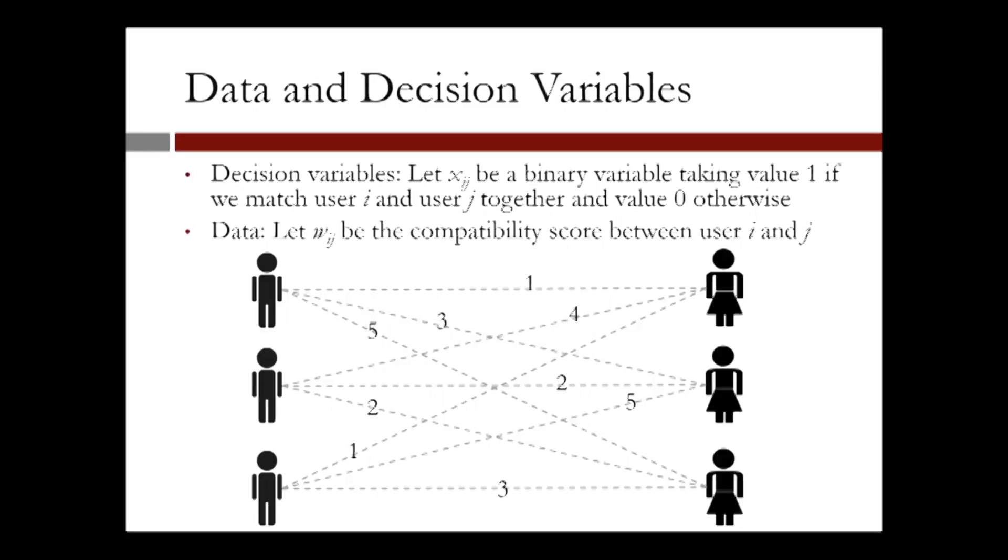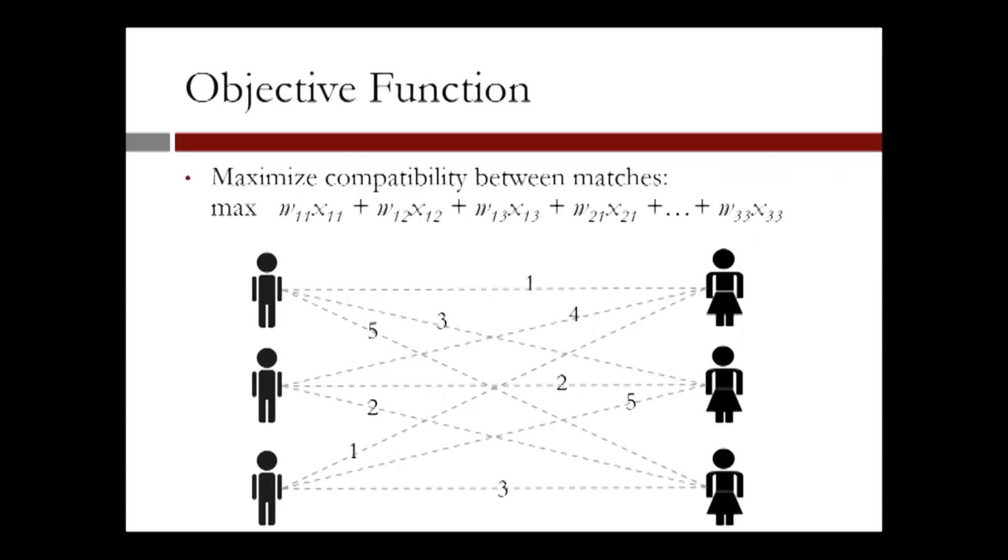We first define decision variables xij. These are binary variables taking value 1 if we match user i and user j together, and value 0 otherwise. We next define the objective function, which is to maximize compatibility between matches. In this case, we maximize the sum of w11x11 plus w12x12 and so forth, up to w33x33.